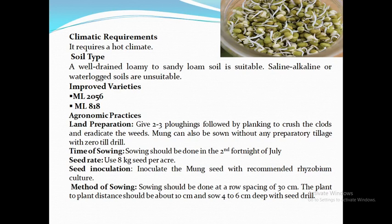The next variety is ML 818, released in 2003. Its plants are erect and medium-statured, with each pod containing 10 to 11 seeds. It is also tolerant to mosaic virus and leaf spot disease, matures in 72 days, and its average grain yield is about 4.2 quintals per acre.